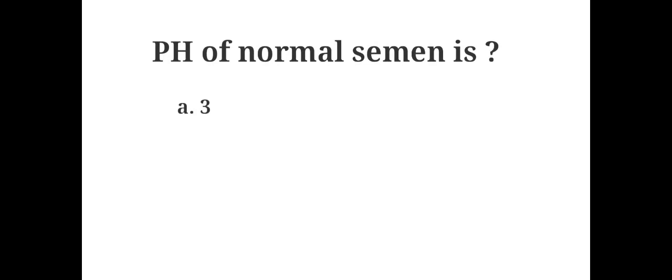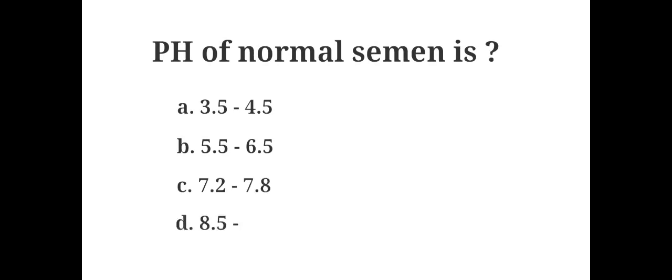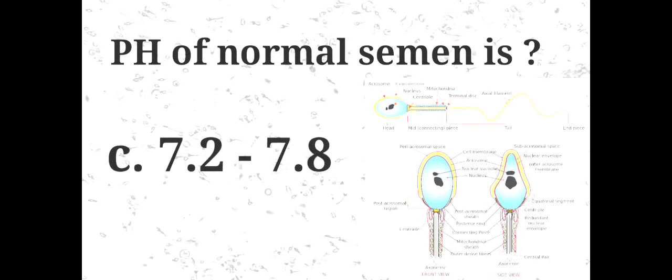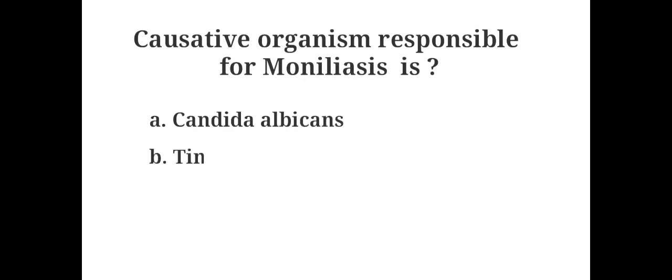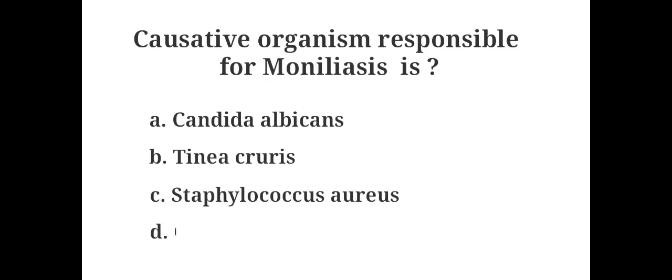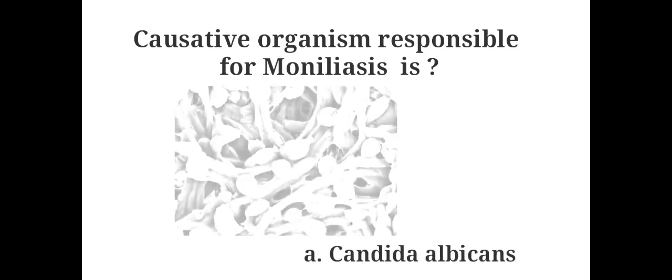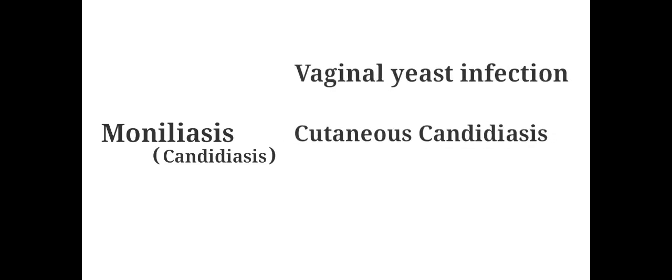The pH of normal semen is: A. 3.5 to 4.5, B. 5.5 to 6.5, C. 7.2 to 7.8, D. 8.5 to 9.3. The answer is C. 7.2 to 7.8. The causative organism responsible for moniliasis is: A. Candida albicans, B. Tinea cruris, C. Staphylococcus aureus, D. Gonococci. The answer is A. Candida albicans. Moniliasis, also called Candidiasis, is a fungal infection. Common types include vaginal yeast infection, cutaneous candidiasis, and oral thrush.